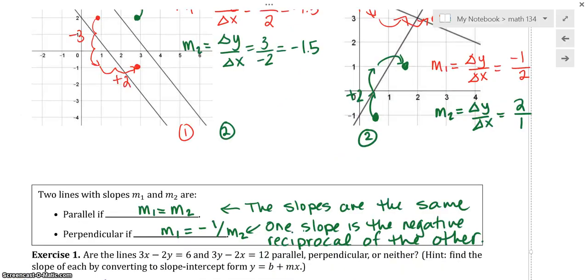So now I'd like you to pause and try exercise one. Maybe even exercise two. Exercise one says, are the lines 3x minus 2y equals 6 and 3y minus 2x equals 12, are they parallel, perpendicular, or neither? They give a hint. Find the slope of each line by converting the slope into the form y equals mx plus b. So take a moment. See if you can do this. Pause and come back when you're ready to see the solution.